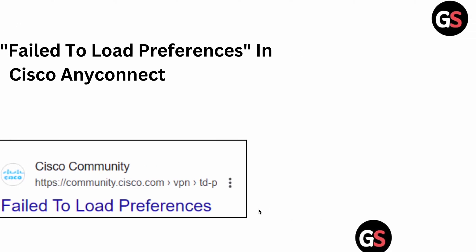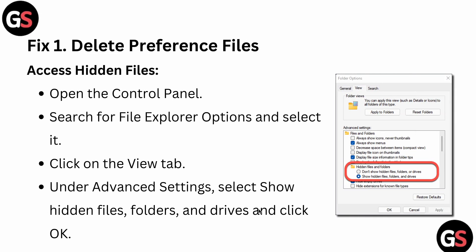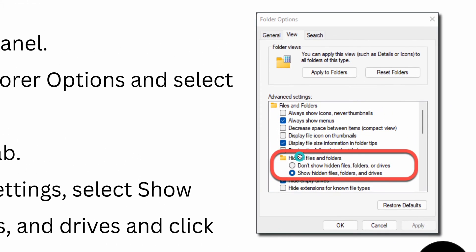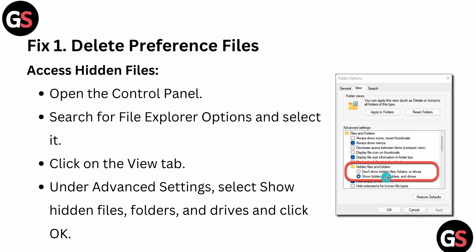Let's start. First of all, you can delete your preferences files. For deleting, simply open your Control Panel, search for File Explorer Options and select it, click on the View tab, and under Advanced Settings, select 'Show hidden files, folders, and drives'. This allows you to access hidden folders.